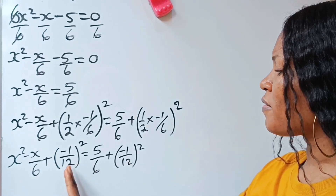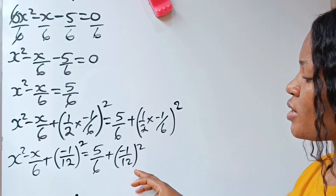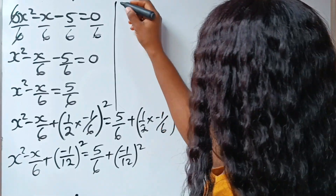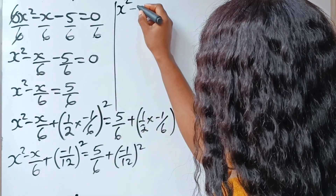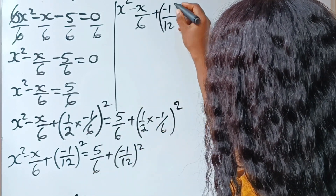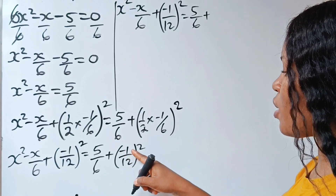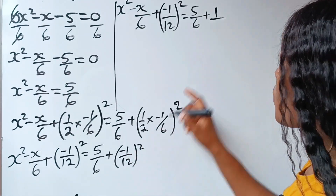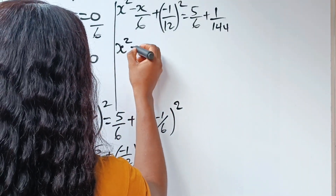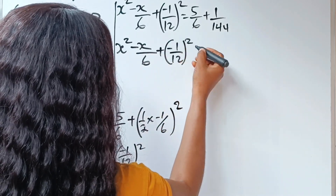Now for the left-hand side, do not factor or solve this further — leave it in square form. But on the right-hand side, please solve this further. So we have x squared minus x over 6 plus minus 1 over 12 squared is equal to 5 over 6 plus, now solving the right side: minus 1 squared gives us 1, and 12 squared gives us 144.